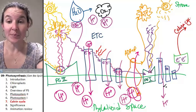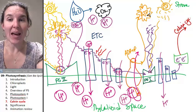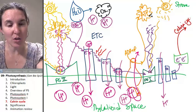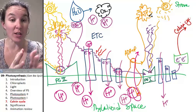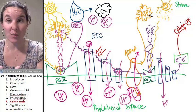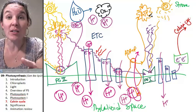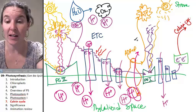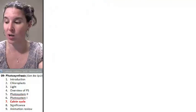Shall we go to the Calvin cycle? We're going to take a high energy electron carrier and we're going to take the ATP. So essentially the light reactions using photosystem two and photosystem one are producing the raw materials that we need in the Calvin cycle.